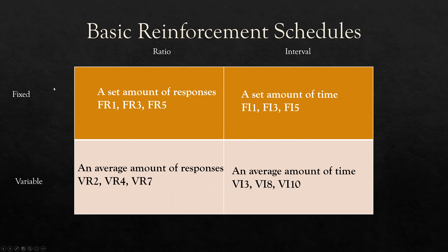If you combine fixed with ratio, you get a set amount of responses, meaning reinforcement is delivered based on the amount of responses that don't change. Fixed interval is based on a set amount of time. A variable ratio is based on an average amount of responses — the requirement is always changing. A variable interval is an average amount of time. This is the foundation for our reinforcement schedules. When you're taking your exam, I recommend breaking it down this way.